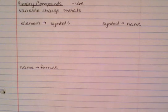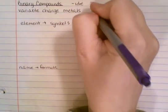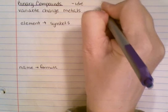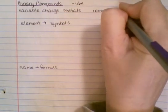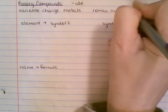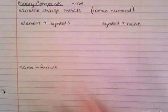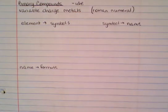We've looked at binary compounds with fixed charge metals. Now we need to look at binary compounds with variable charge metals. Remember that if it has a variable charge, it will always have a Roman numeral. So if you see something that has a Roman numeral in it, you automatically know it has a variable charge.